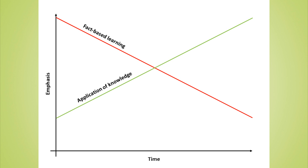So you need to put greater emphasis on learning facts at a younger age and then gradually make a transition where you learn fewer facts but do more application. You never eliminate fact learning, but as this graph shows, you see that transition where at some point application takes over fact-based learning as the priority of education.